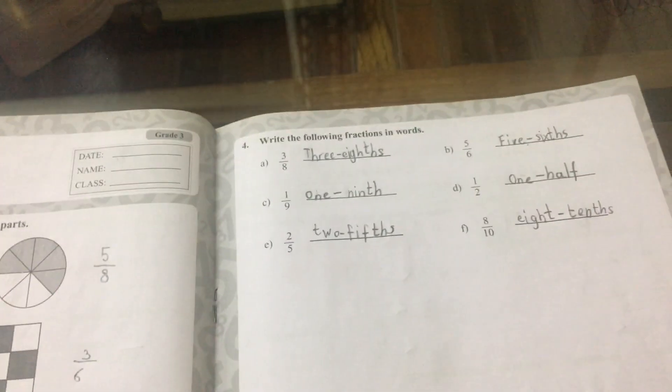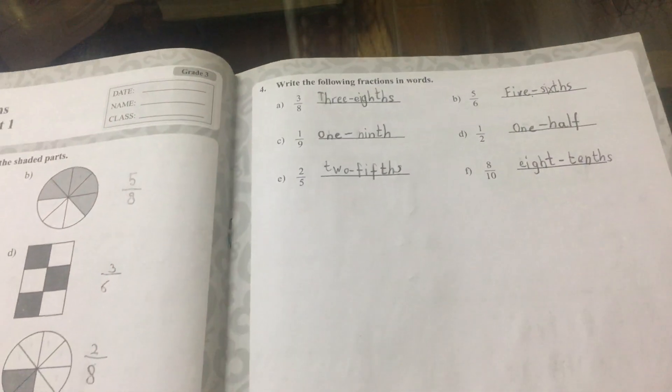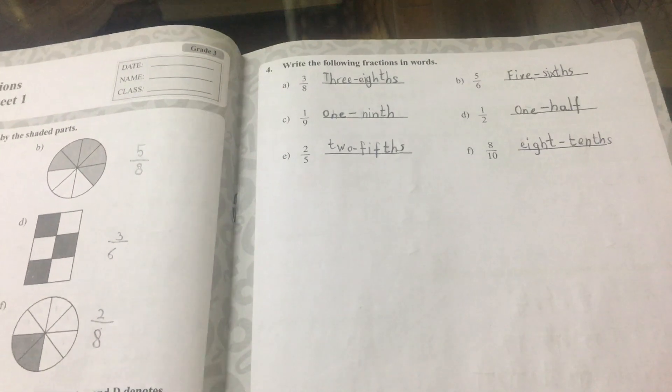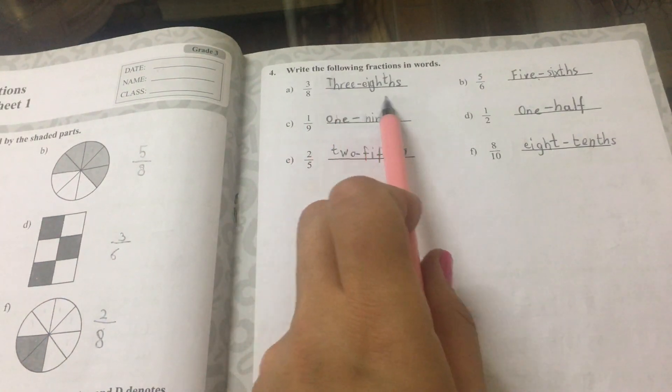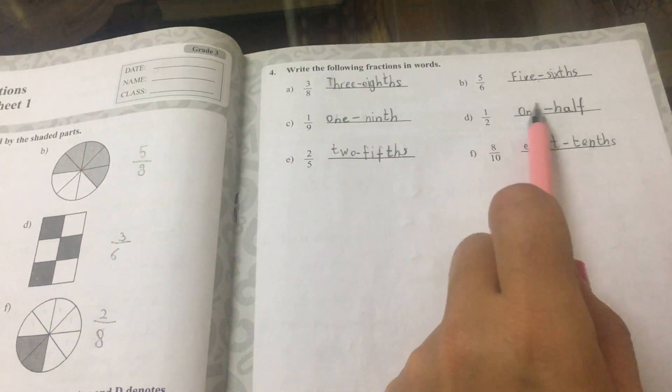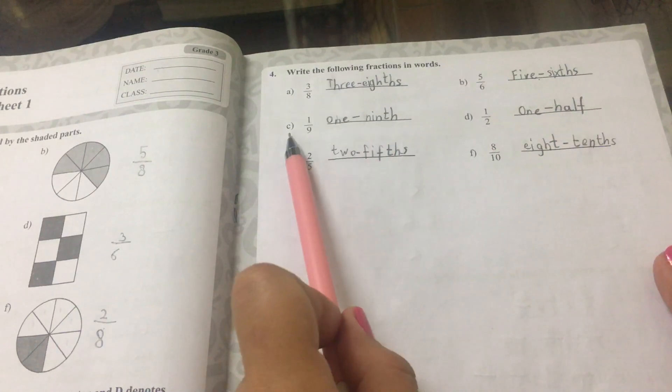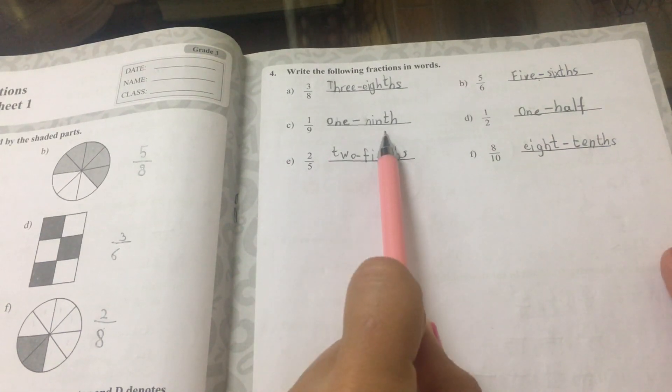Question number 4. Write the following fractions in words. A is 3 eighths, B is 5 sixths, C is 1 ninths.